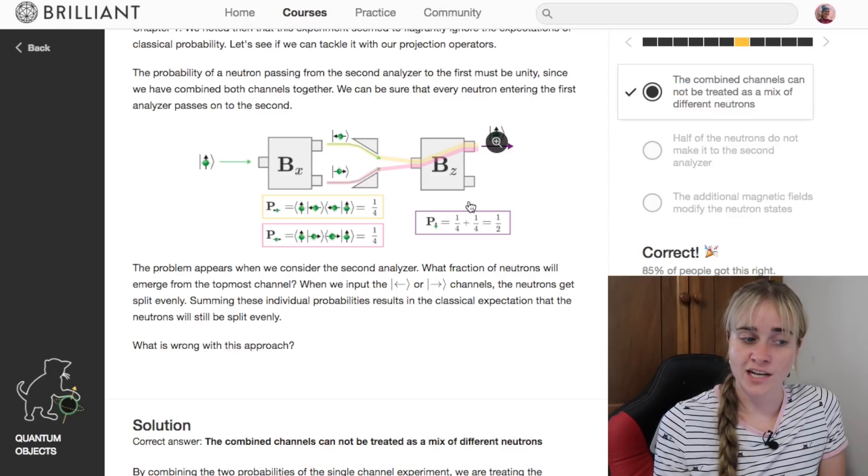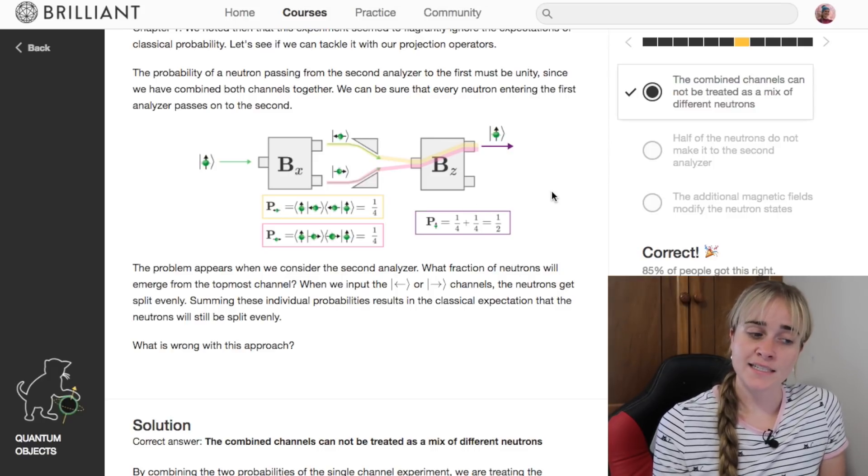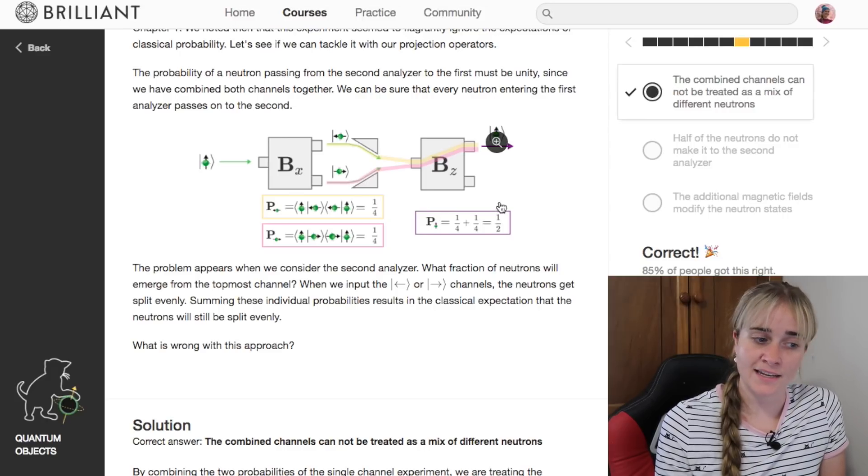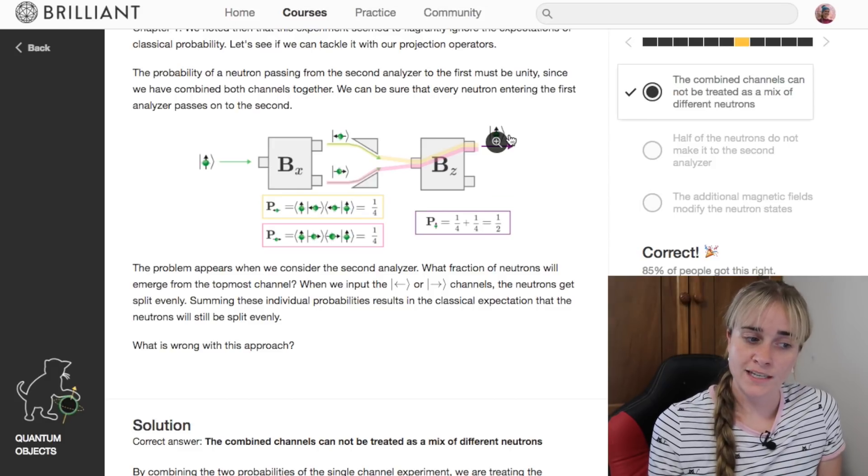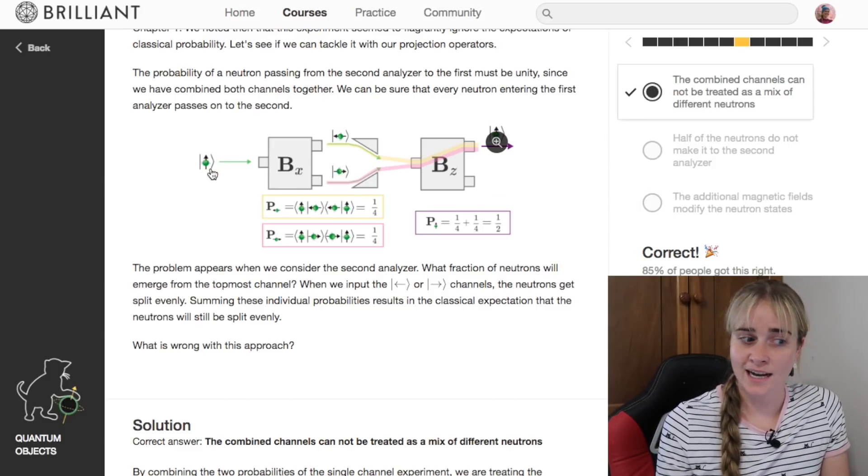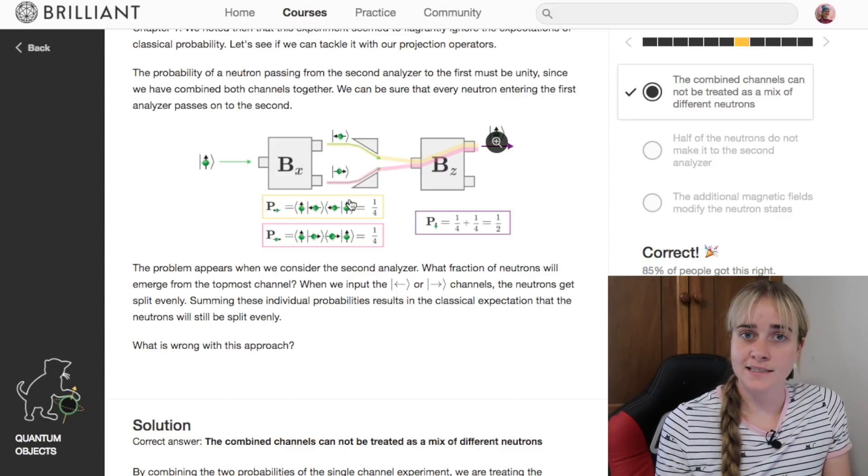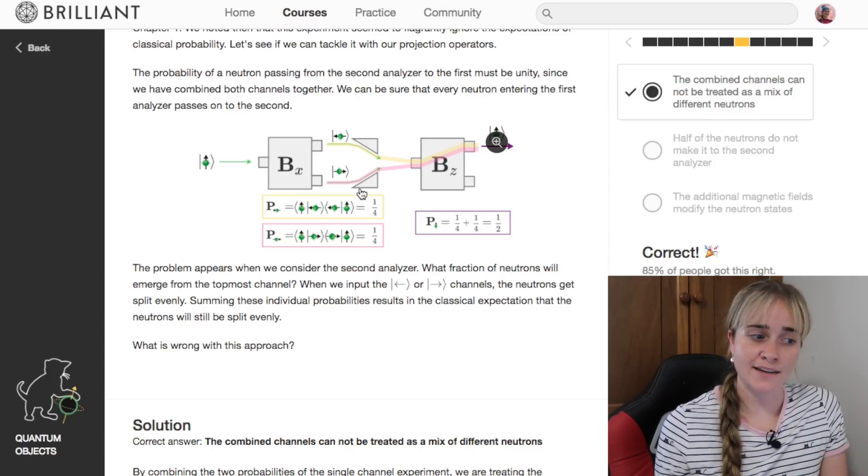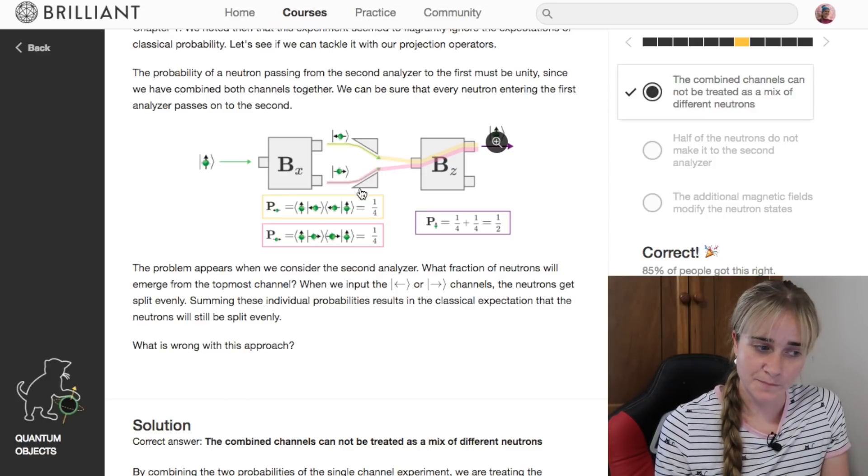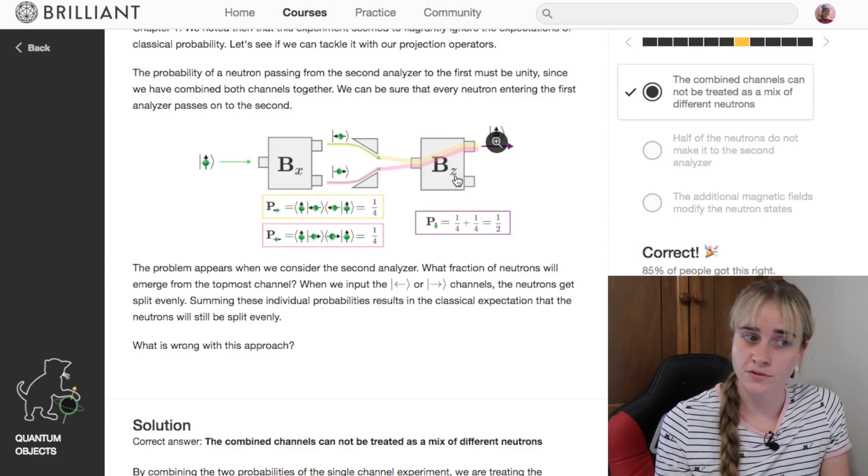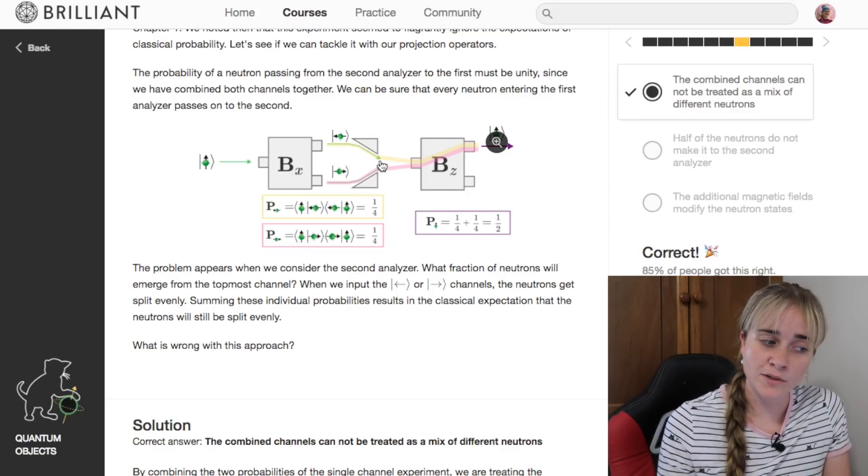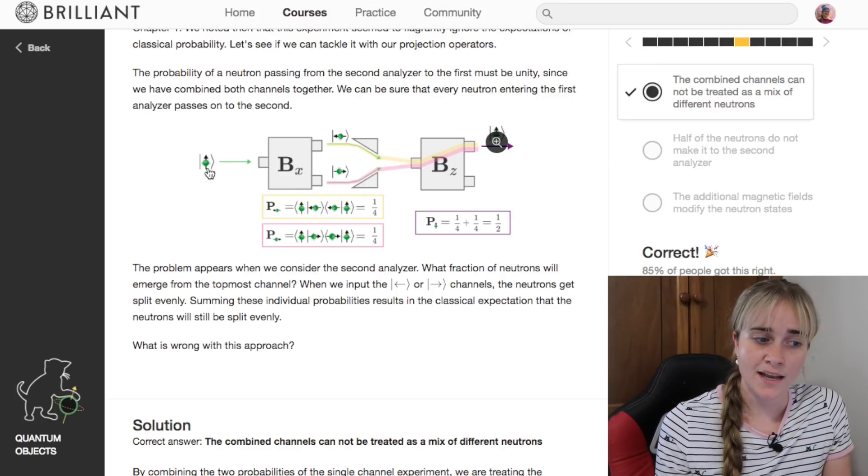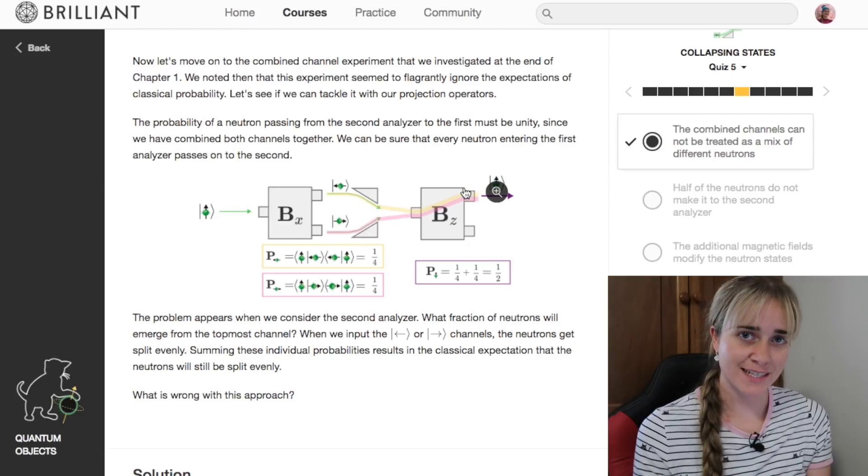If you've seen the previous video of mine in the series, that is actually not what we see. We don't see a 50-50 chance here at this final analyzer. Instead we see 100% of the neutrons coming out the end as spin up, so there was something that happened along the way where the memory of it being spin up was retained all the way from the start, even though we'd had this intermediate step which usually would completely reset the memory because x and z are orthogonal to each other. So there's something going on here.